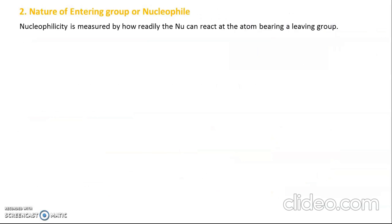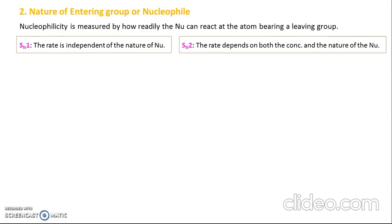The second factor is the nature of the entering group, that is the incoming nucleophile. Nucleophilicity is measured by how fast the nucleophile can attack the atom carrying the leaving group. For SN1, the rate is independent of the nature of the nucleophile because the nucleophile concentration term is not in the rate expression. But for SN2, both the concentration of the nucleophile and alkyl halide are involved, so the rate depends on both the concentration and nature of the nucleophile.